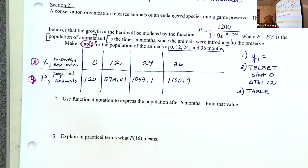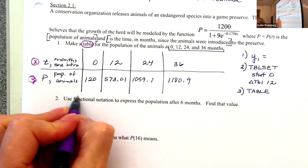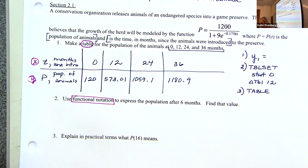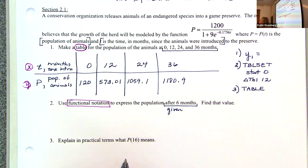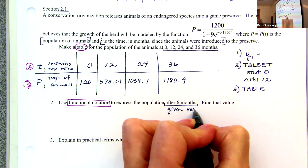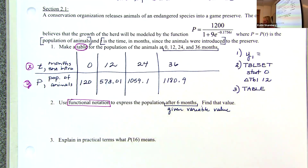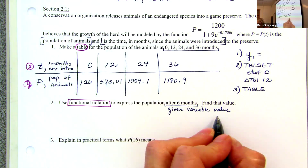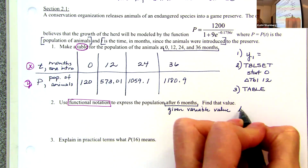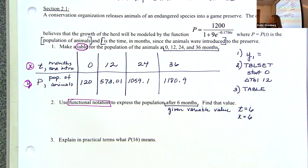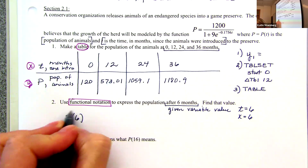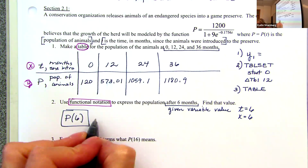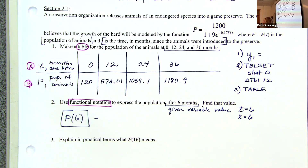Use functional notation to express the population after six months. If you don't use functional notation on the test, I'll count off. So my variable value is at six—that would be T equals six. There are two correct ways to find this value; either way is fine.